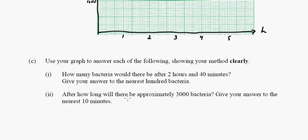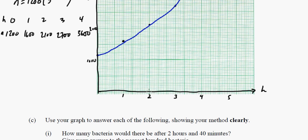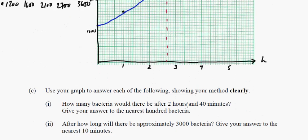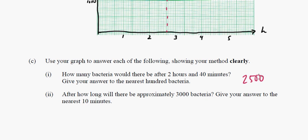So use your graph to answer each of the following questions. Show your method clearly. How many bacteria would there be after 2 hours and 40 minutes? Give your answer to the nearest 100. So, 2 hours and 40 minutes. So if we're going to do that, here's 2, here's 220, here's 240. So you should always have a ruler. And I don't have a ruler because it's really hard to use a ruler on a stencil like this. So go up here. And when they say show your method clearly and they say use your graph, this is what they want you to do. I mean, you could actually figure it out mathematically just to check your work. But that looks like it's right in between. It's in between 2,000, 3,000, it's 2,500. So that answer right there is going to be 2,500 bacteria.